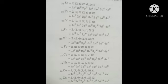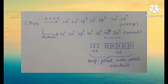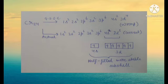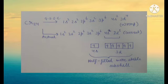The electronic configuration for Chromium is a special case. Chromium (atomic number 24) in the ground state is initially written as 1s2, 2s2, 2p6, 3s2, 3p6, 4s2, 3d4, where the 4s subshell has 2 electrons and 3d has 4 electrons. But this configuration is wrong because the last electron moves to 3d to make it half-filled and more stable.